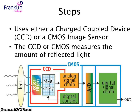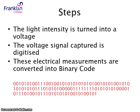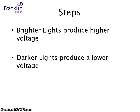This data is converted into an electrical signal. This is what the CCD or CMOS does — it measures the electrical signal, the voltage, and this is eventually turned into binary code. So the light intensity is turned into a voltage, the voltage is digitised, and the electrical measurements are converted into binary code — very much like a barcode reader. Brighter lights produce a higher voltage; darker lights produce a lower voltage.